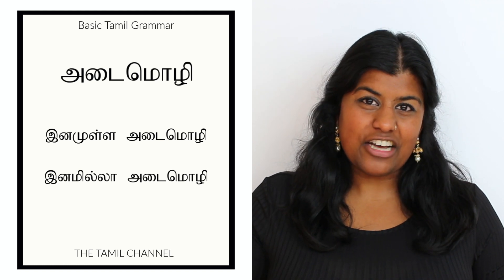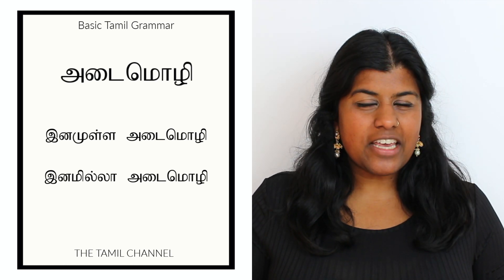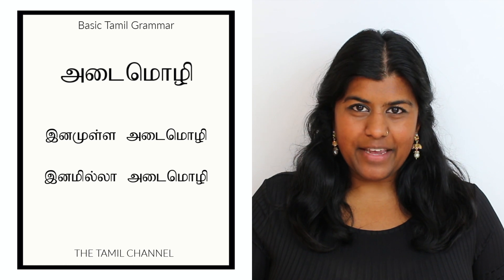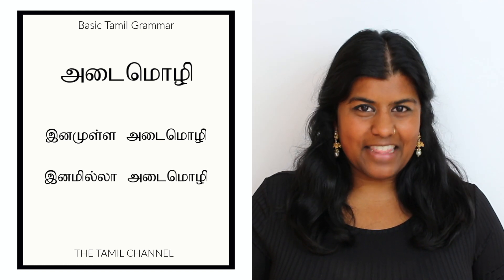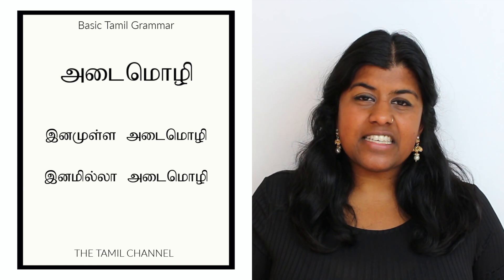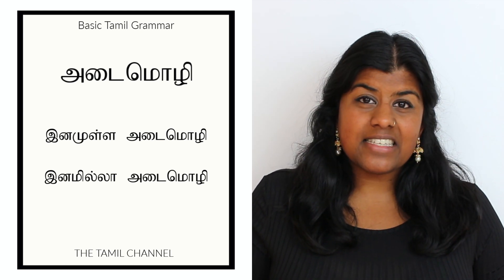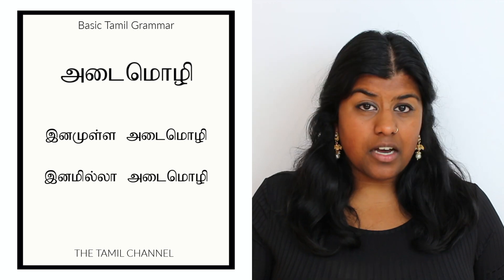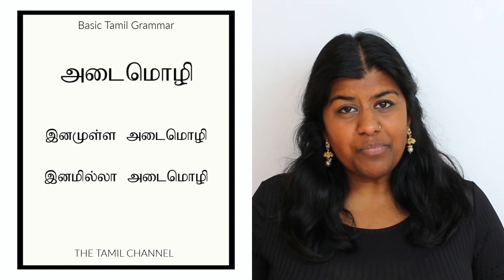In Tamil grammar there are two types of adai molly: Inamulla adai molly and Inamilla adai molly. Let me first begin by explaining what Inam means in Tamil. Inam can mean type, species, breed, or race. So Inamulla means with Inam, and Inamilla means without Inam.